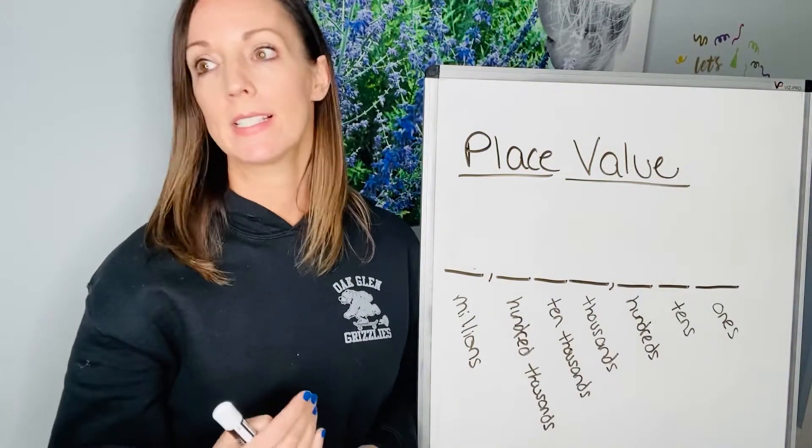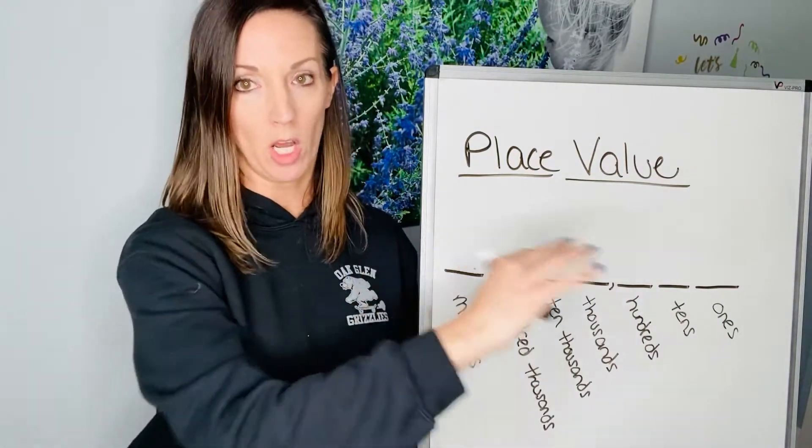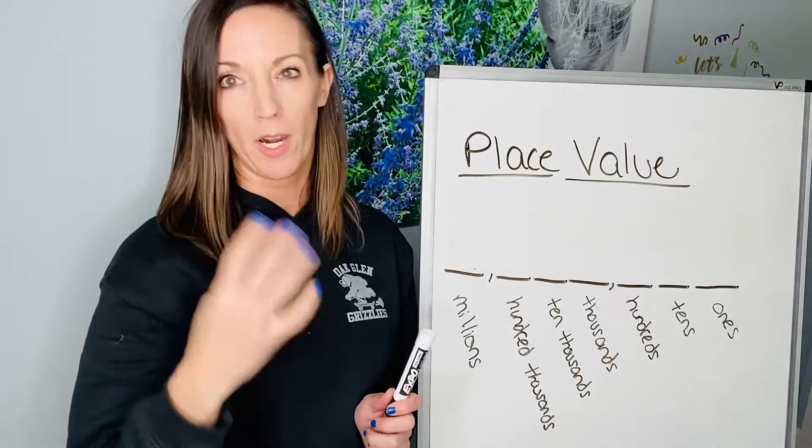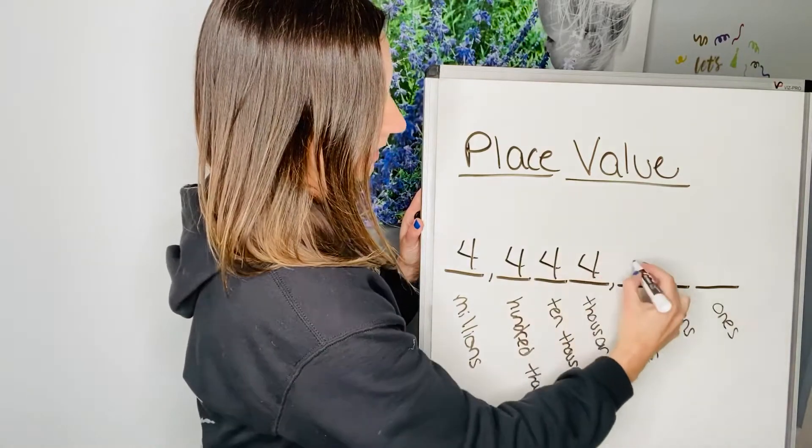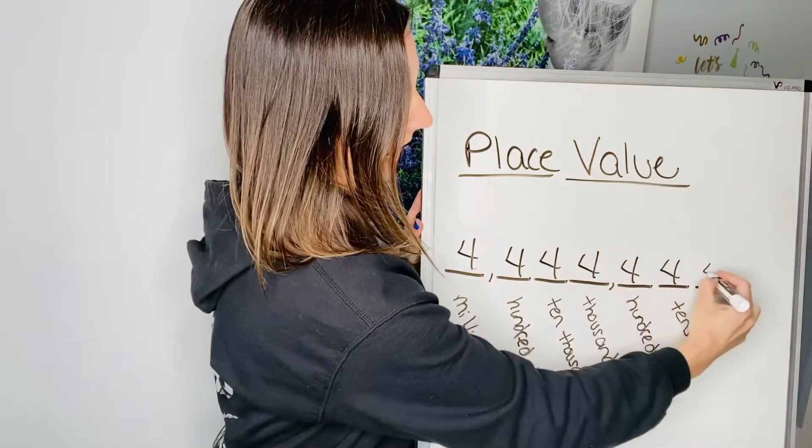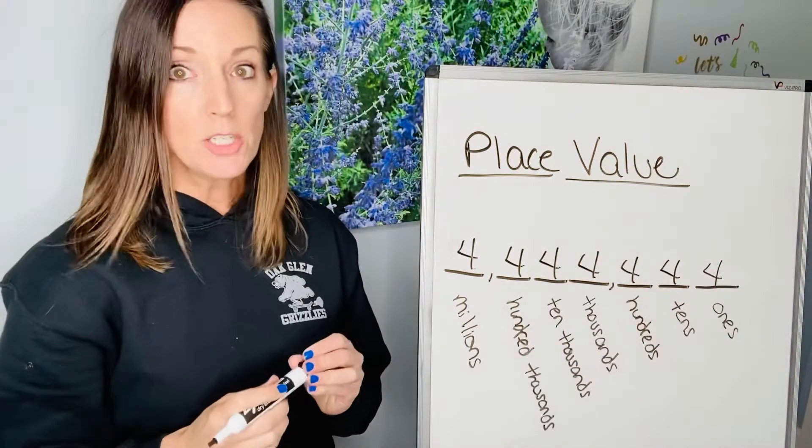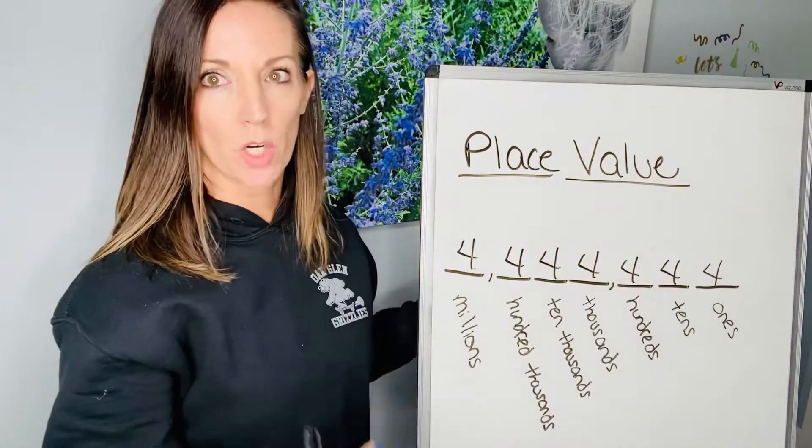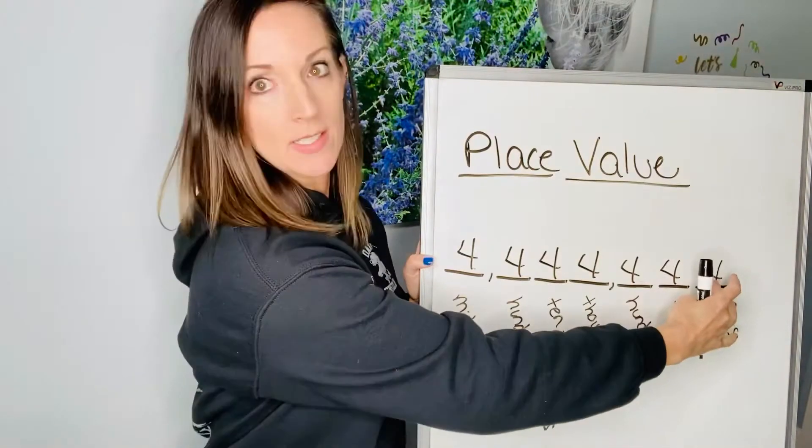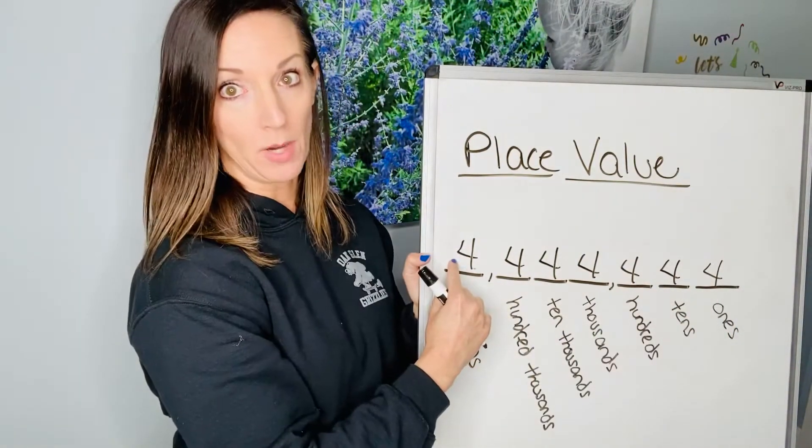Place value matters because, let's say I'm going to use the same digit for all these place values. Say I'm going to use four. I'll put four in all of these places. These are not equal numbers. The digit is four, but where they're at in this number makes it worth more. Four ones is way different than four million.